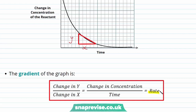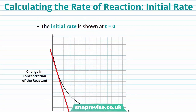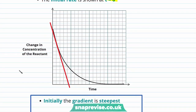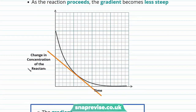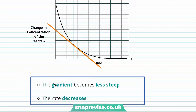To monitor the changing rate of reaction, initially we calculate the rate at t = 0 by drawing a tangent — a straight line — to our curve. Initially at t = 0 the gradient is the steepest, indicating that the rate is fastest at this initial point. If we then draw another tangent later on in our curve, we can see that the gradient has become less steep, indicating that the rate has decreased.